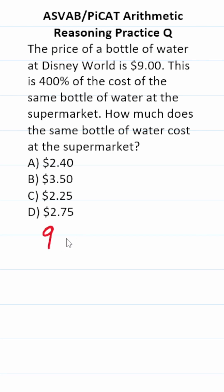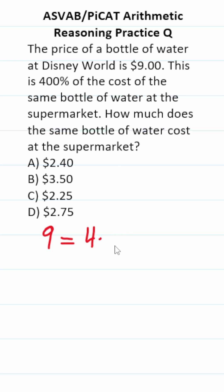We're told the cost of water at Disney World is $9 per bottle. 'Is' in math is usually equal. 400% is going to be 4 in decimal form. 'Of' in math is typically multiply — the cost of the same bottle in the store. That's unknown, so we'll call that X.